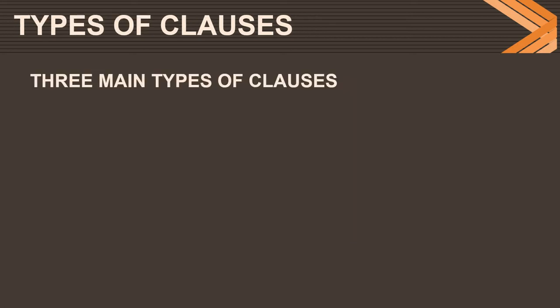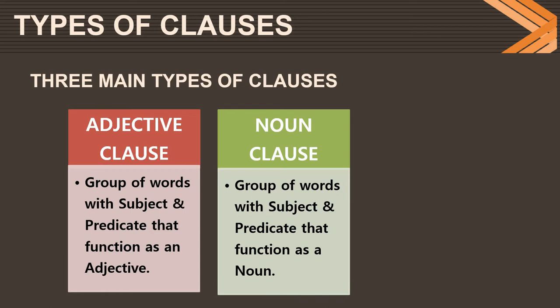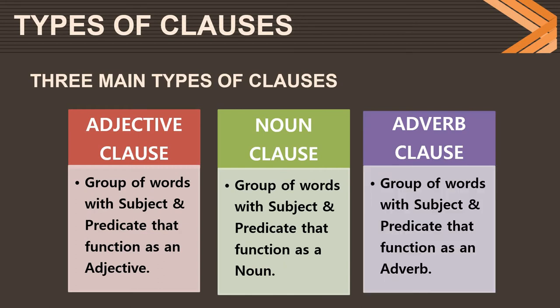Now we proceed to learn the different types of clauses. There are mainly three different types: adjective clause, noun clause, and adverb clause. All are groups of words with subject and predicate, but their function is different. An adjective clause functions as an adjective, a noun clause functions as a noun, and an adverb clause functions as an adverb. We shall see each one in detail and also how to write their clause analysis.